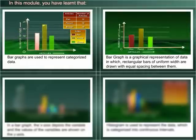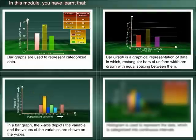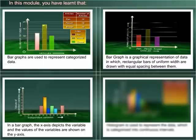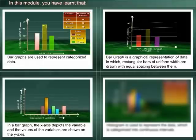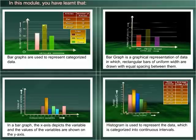In this module you have learned that bar graphs are used to represent categorized data. A bar graph is a graphical representation of data in which rectangular bars of uniform width are drawn with equal spacing between them. In a bar graph, the x-axis depicts the variable and the values of the variables are shown on the y-axis. A histogram is used to represent data which is categorized into continuous intervals.